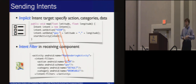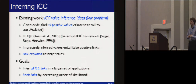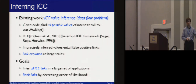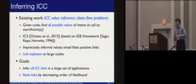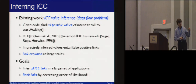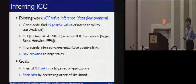Given these communication mechanisms, we want to figure out how components communicate with each other. Existing work infers the values of inter-component communication. For example, given the code shown earlier, this work can find all possible values of the intent variable at the call to startActivity. The problem is we're doing static analysis, and you can't always infer all variable values precisely — you have to make over-approximations, leading to imprecisions. When resolving an imprecise intent to its potential targets, you get an explosion in the number of potential links, because you must remain conservative. This is particularly a problem at large scales.